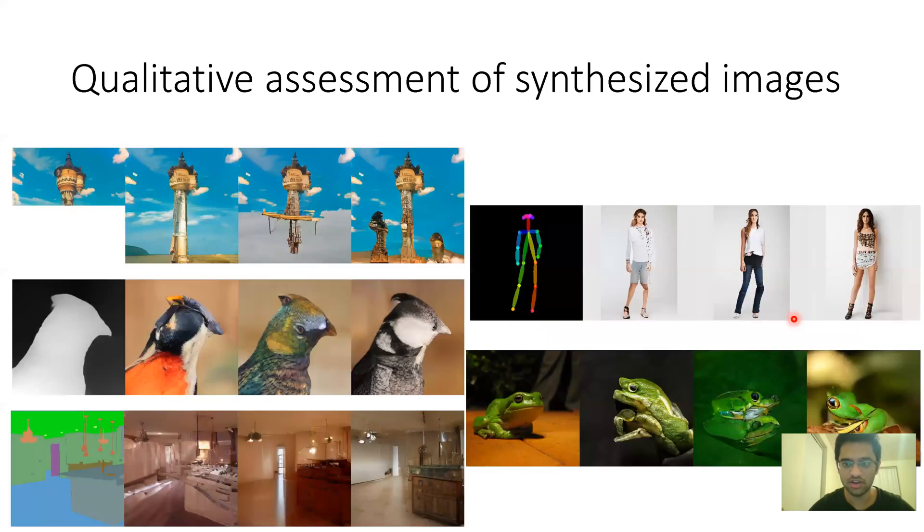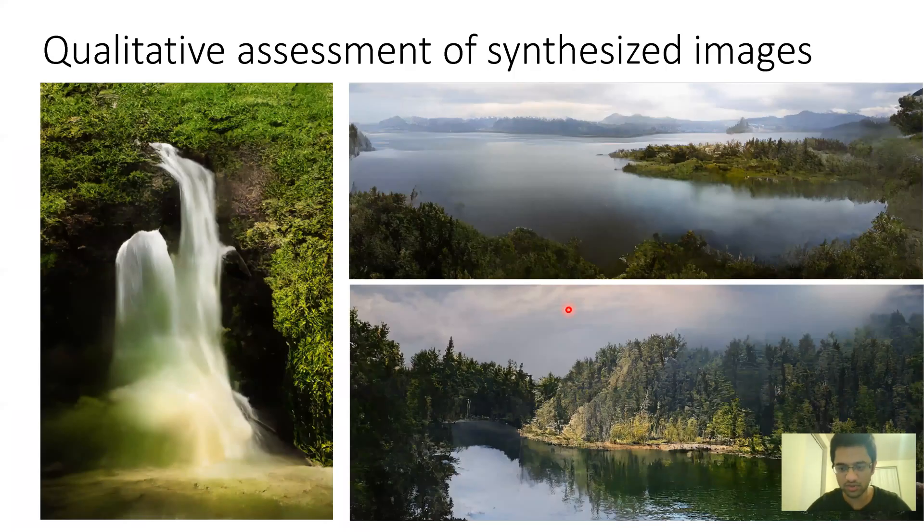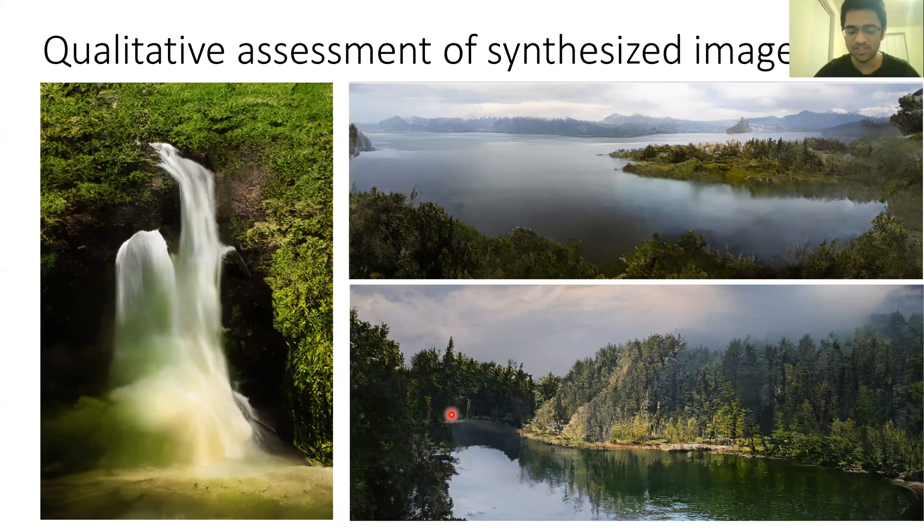The second experiment is just a qualitative assessment. You can see these are some images that their model has generated. They look pretty good. This is not using the high-resolution image generation, the patchwise idea that I talked about. This is just the vanilla version. This is, however, the patchwise one. You can see the amount of detail that this has. These are all images generated by conditioning on the semantic map of these pictures. That's pretty wonderful and exciting.